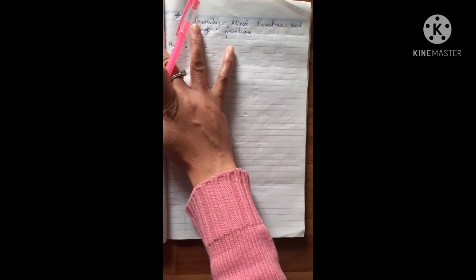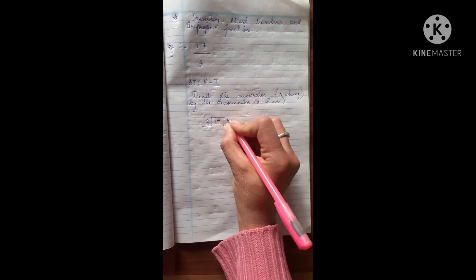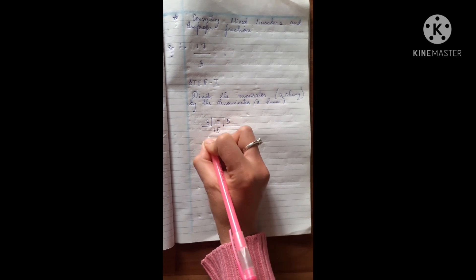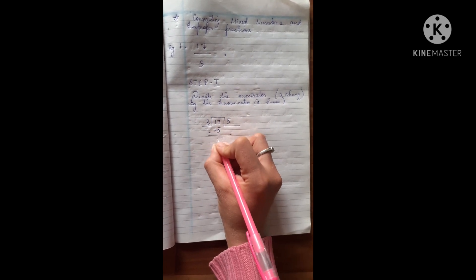I'm going to write it down step by step and you will follow my lead. Step number one: divide the numerator by the denominator. So we divide seventeen by three. Three times five is fifteen, and we find the remainder which is two.